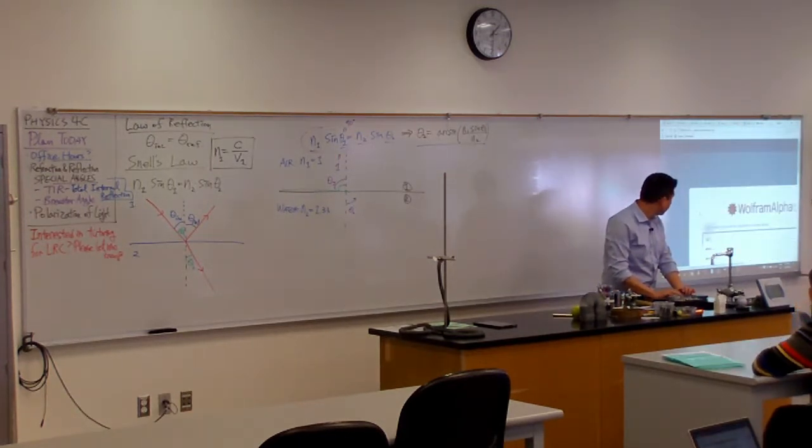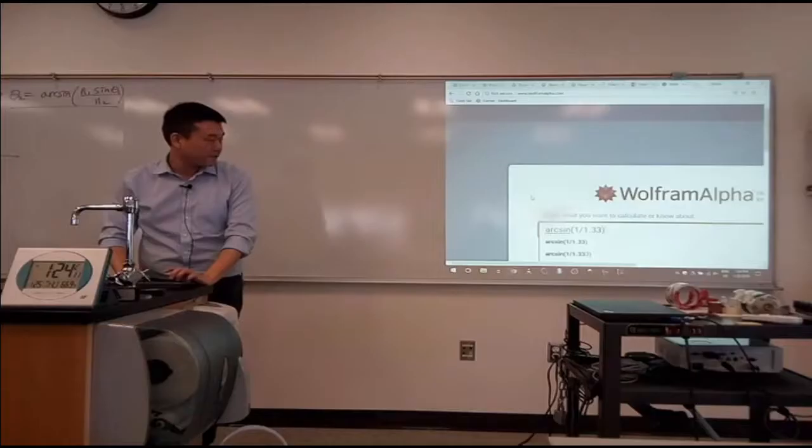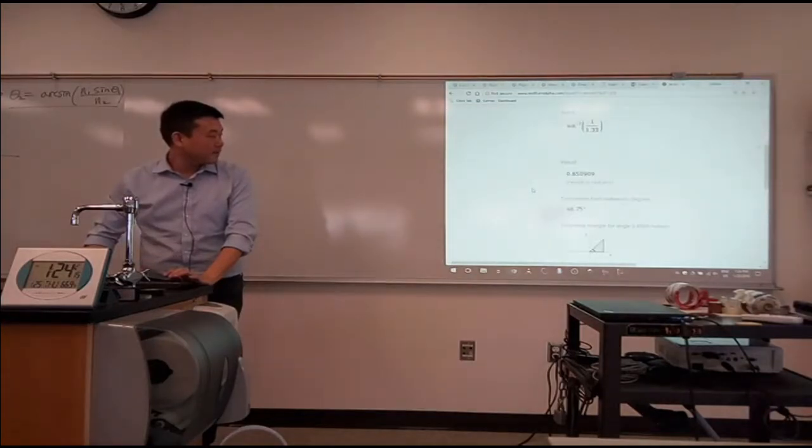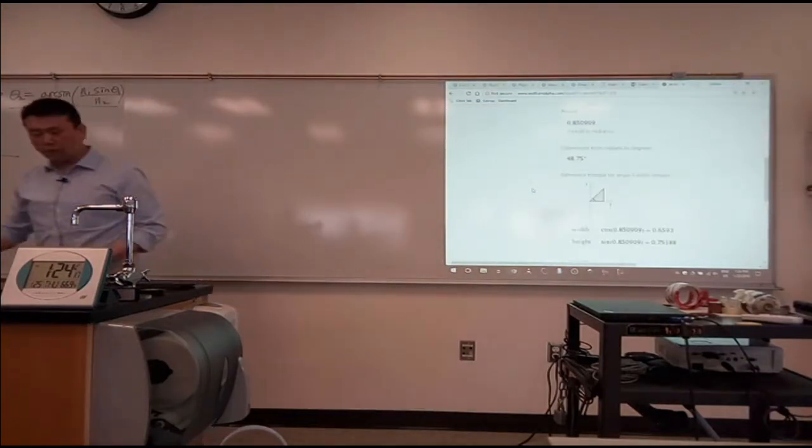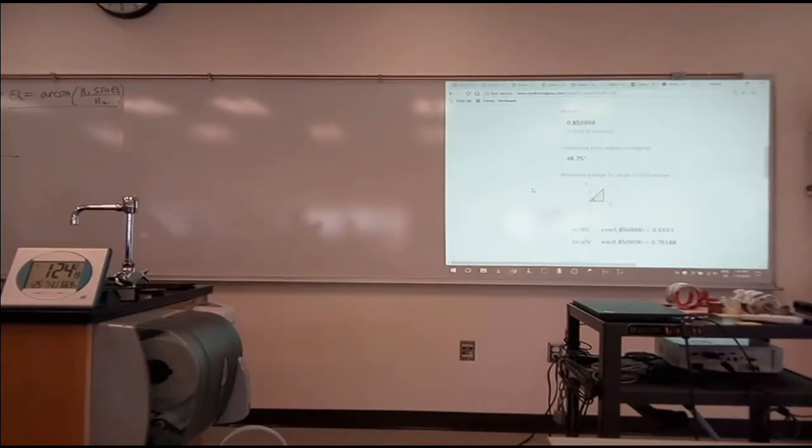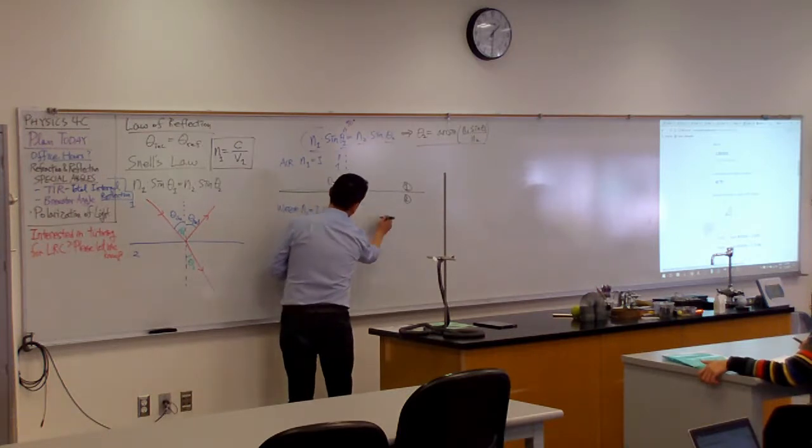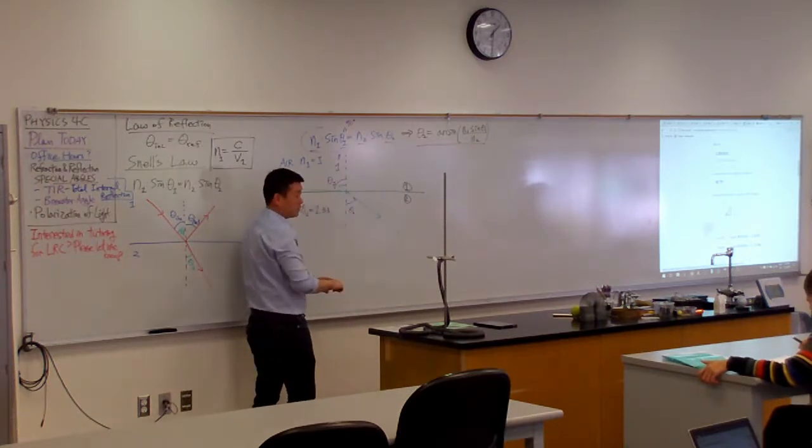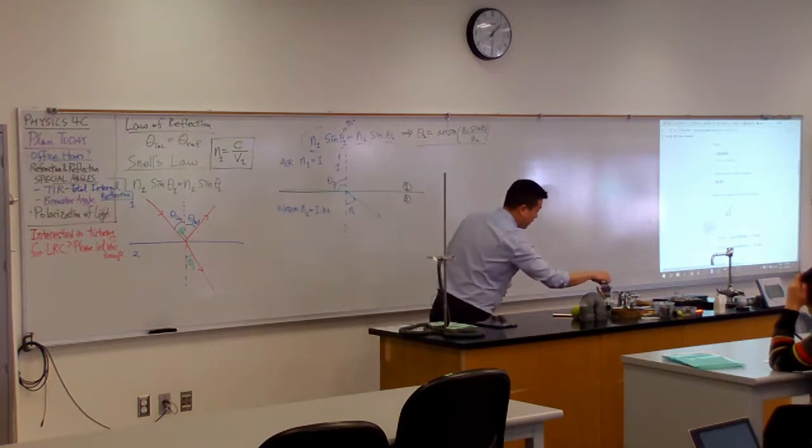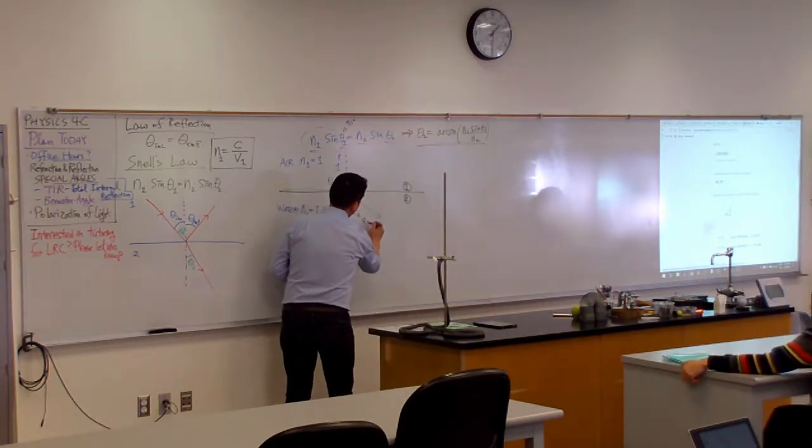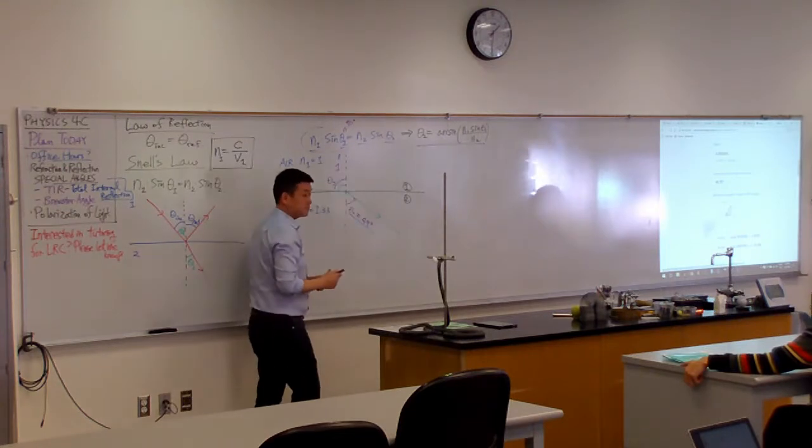Let me plug in those numbers so that we have something concrete. We are looking for arc sine of 1 divided by 1.33. 48, wow, that is a lot smaller than I would have guessed. So if I'm trying to draw this to scale, it would look something like this. This is the refracted ray going out at an angle of something like 49 degrees or so.